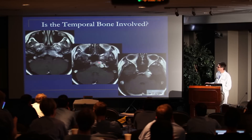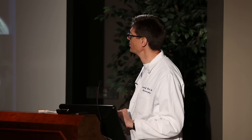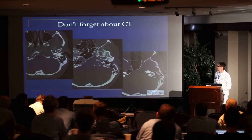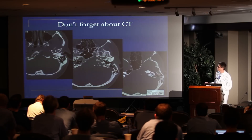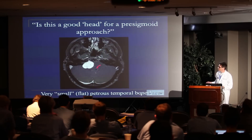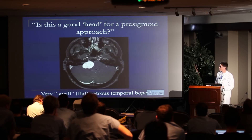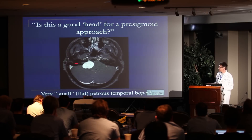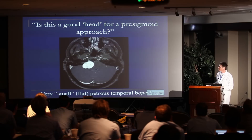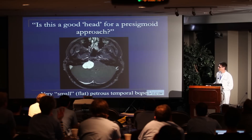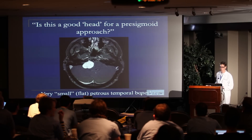And then, is the temporal bone involved? This is a chondrosarcoma in the temporal bone, so being able to drill the temporal bone is obviously very important because that's where the pathology is. CT scan is really important for surgical planning in relation to the inner ear structures and petrous apex. I also think about other radiographic findings — when you look at this tumor here, is this a good skull for a pre-sigmoid approach? No — it's a terrible one, because this patient has tiny petrous bones. The line from petrous bone to petrous bone is nearly straight across.